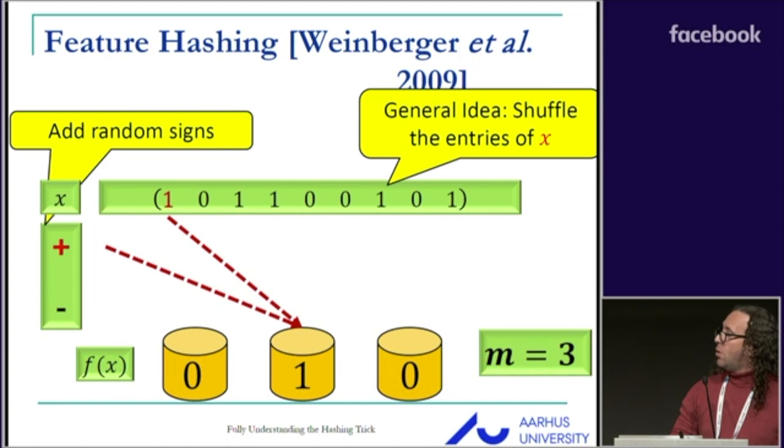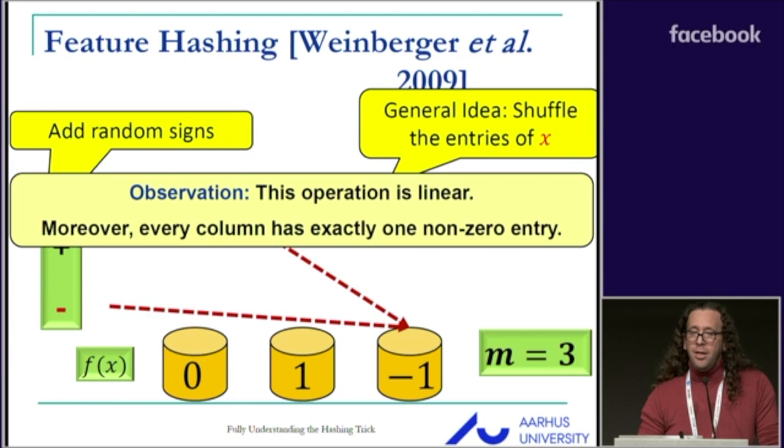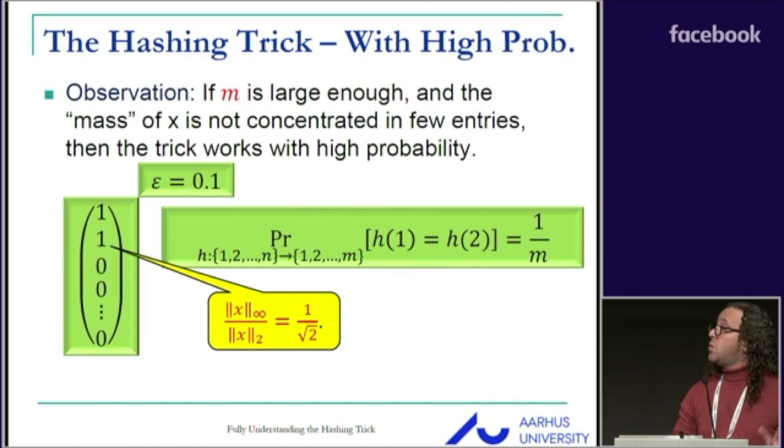So this is an example. A quick observation is that this operation is linear and furthermore it is as sparse as possible. Every entry of X is touched exactly once by the matrix.